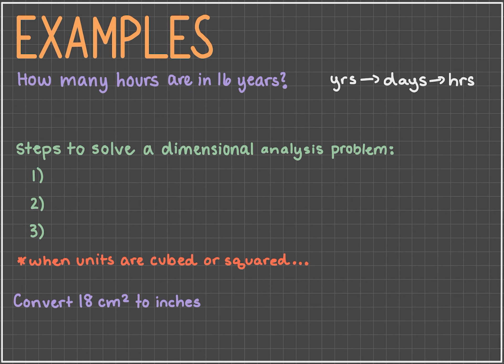So now we can start converting. Let's write our given 16 years over 1, and then convert that to days. So since there are 365 days in a year, we multiply 16 by 365 days over 1 year. And now days to hours. There are 24 hours in a day, so we multiply our expression by 24 hours over 1 day.